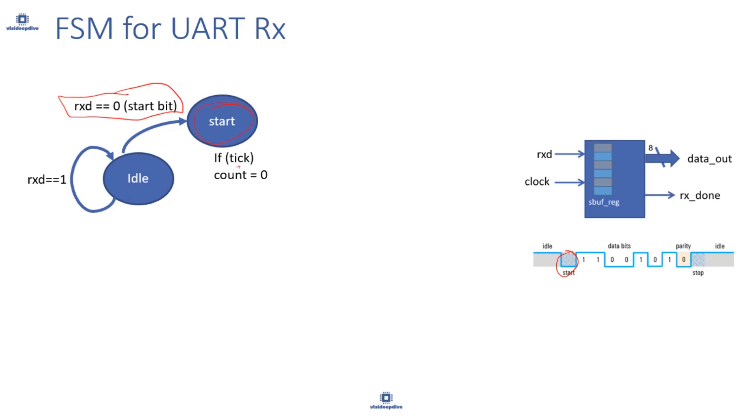Then it will set count to 0. Why it will set count to 0 is because then it will start counting that I have to receive 8 bits - 1, 2, 3, 4, these 8 bits I have to receive. So start the count to 0 and then start looking for all the 8-bit data that has to be received. So basically start bit has come, count has been set to 0, now it will move to transmission state.